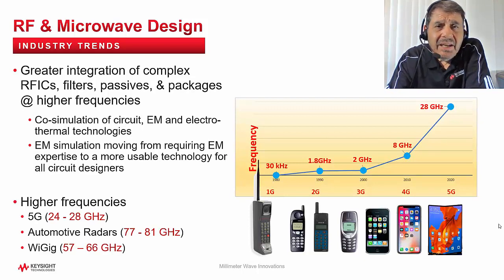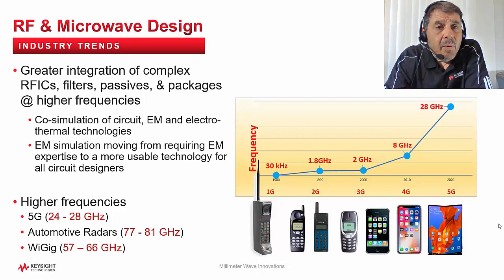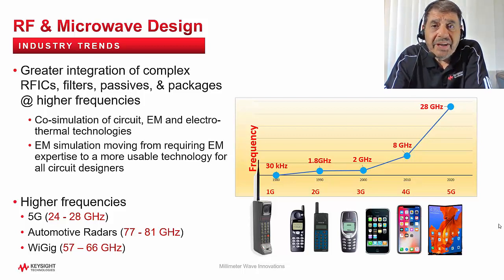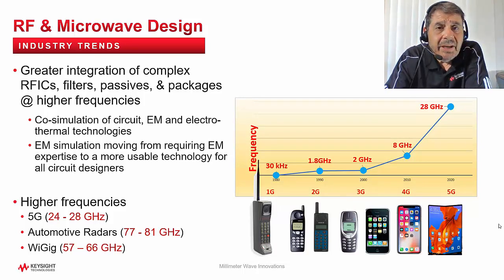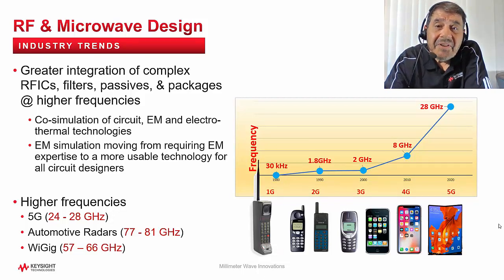We're now witnessing 5G technology operating in the 28 GHz millimeter wave band. Other upcoming high-volume and high-revenue applications are in automotive radars and wireless networking that work at much higher frequencies. As a result, the work for RF and microwave circuit designers is definitely not getting any easier.